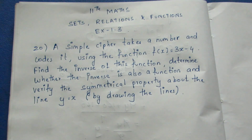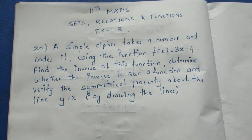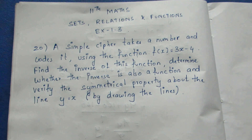Hello viewers, I am Ithli. In the 11th Math, Sets, Relations and Functions, exercise 1.3, sum 20. The question: A simple cipher takes a number and codes it using the function f(x) = 3x - 4. Find the inverse of this function, determine whether the inverse is also a function, and verify the symmetrical property about the line y = x.